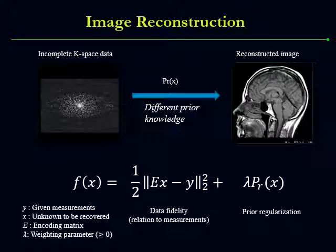Our specific focus here is image reconstruction from incomplete k-space data, whose mathematical model can be described as follows, which consists of a data fidelity term and also a prior regularization term. Lambda is a weighting parameter to determine whether and how much the prior information is introduced.